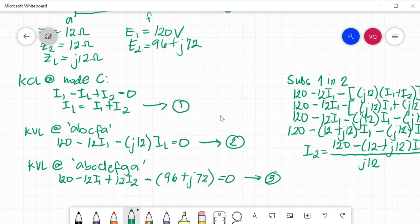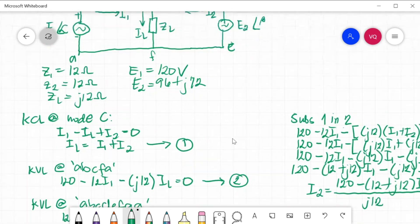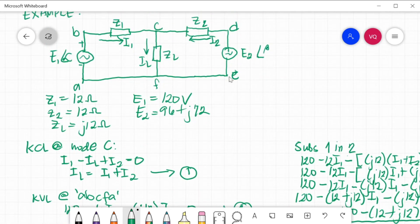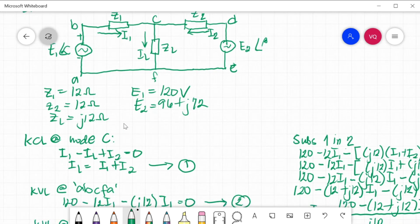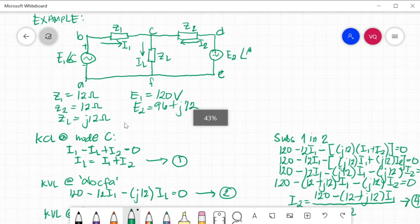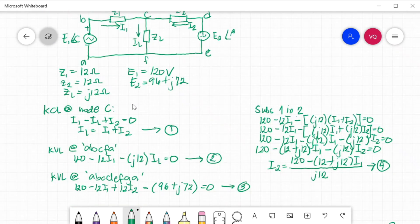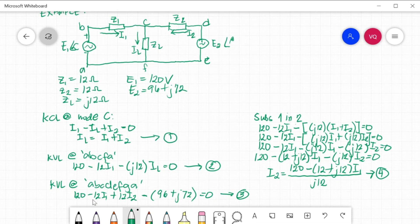Next one. KVL, loop ABCDEFGA. This is outside your circuit. We have AB. Enters into a negative sign of a battery. So that is 120 positive. And then, B, C, this one. B, C is negative 12 I1. C, D, plus 12 I2. Kasi, it is in opposite direction of your I2. Minus.